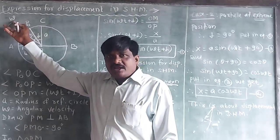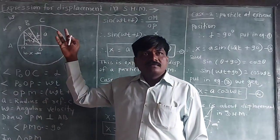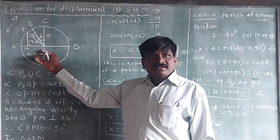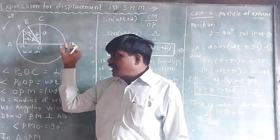The particle is moving with angular velocity omega. O is the center of the reference circle. AB is the diameter of the reference circle.